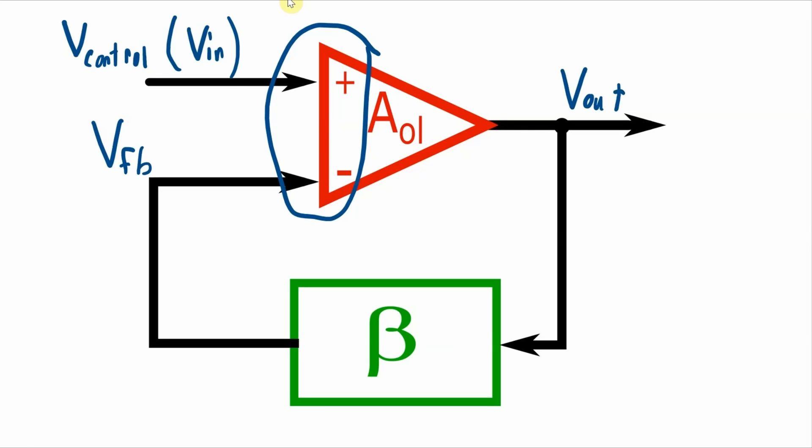So what happens is you have the difference between the input and the feedback being multiplied by AOL feeding back through the beta network to give you the feedback voltage. So that feedback voltage is equal to the difference between the input and the feedback times the open loop gain times beta. And this portion of the equation, this open loop gain times beta, is called the loop gain, because it is the gain applied to the input when it is looped back into the feedback block.